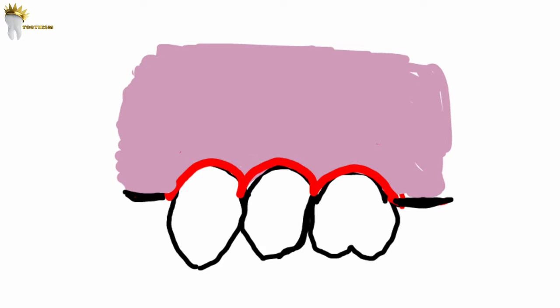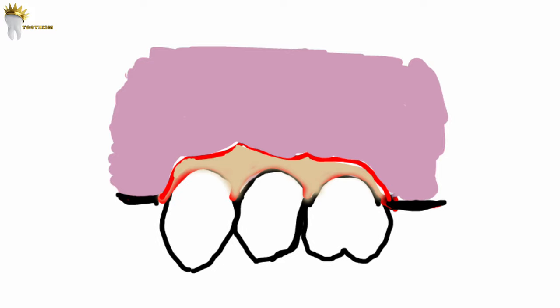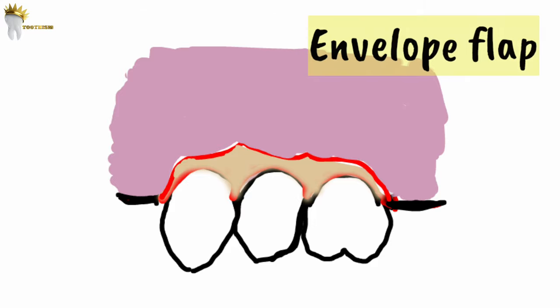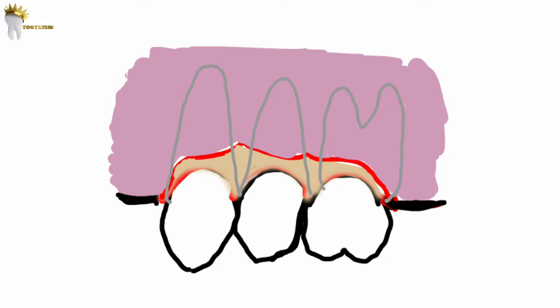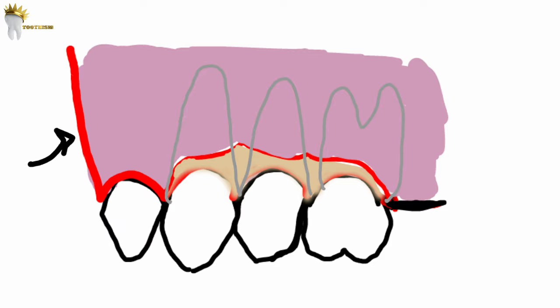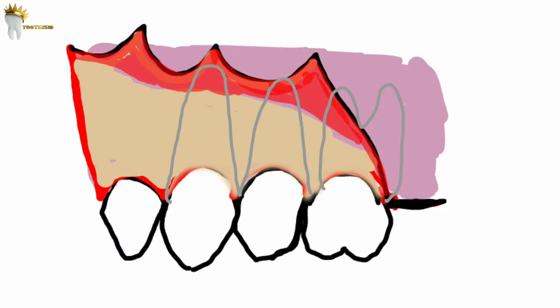For example, an incision made around the necks of the teeth to expose the alveolar bone creates what is called an envelope flap. If we need access to a more apical region of the alveolus, we will need a vertical releasing incision, which should generally be placed one full tooth anterior to the area of any anticipated bone removal. This gives better access and minimizes the chances of flap tearing.